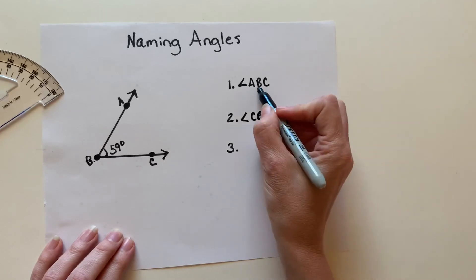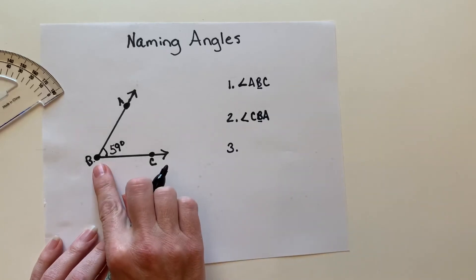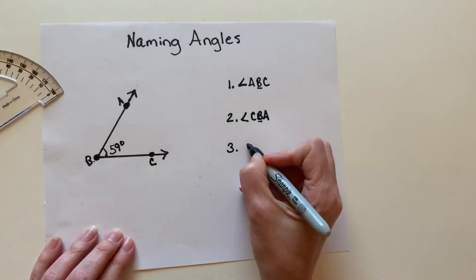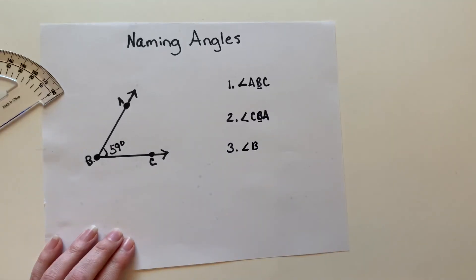Now if you notice, this center letter is the same both times. That's because that B is our vertex where these two rays are coming out from. So the third thing that we can name this angle is we can call it angle B. So those are the three different ways that you can name an angle.